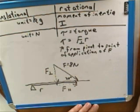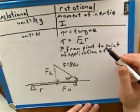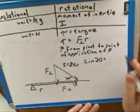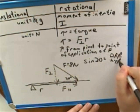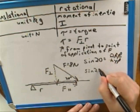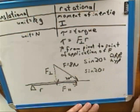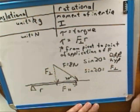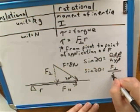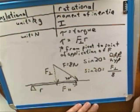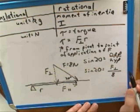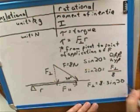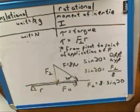Maybe I can give you some help — it looks like you might have gotten a little rusty on breaking things into components. A good way to start is writing sine of 20, and based on SOHCAHTOA, that should be the opposite side over the hypotenuse. Which side of this triangle is the opposite side? So then we would write F perpendicular over 8 — that's right, 8 is the hypotenuse. Now we multiply 8 times the sine of 20. Cross-multiplying gives us 8 sine 20 equals F perpendicular.